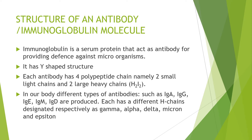B-lymphocytes produce immunoglobulin molecules, which are a type of protein. The structure of an antibody — meaning the immunoglobulin molecule — provides the body's defense system. This molecule has a Y-shaped structure. Each antibody has four polypeptide chains: two heavy chains and two light chains. This is represented by the simple formula H2L2 — that is, two heavy chains and two light chains.